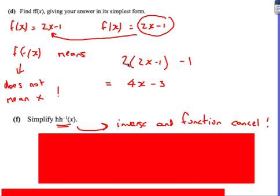Expand that out, it's going to be 4x minus 2 minus 1, so 4x minus 3. Remember, f of f of x does not mean times together, it's a compound function. Put all of the f of x into the x of your second function.